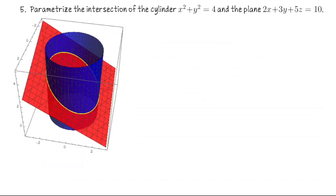Okay, we have one more example in this lecture and that is we want to parametrize the intersection of the cylinder x squared plus y squared equals 4. That's pictured here. So that's a circular cylinder of radius 2 whose central axis is the z-axis. We want to parametrize the intersection of that cylinder and the plane 2x plus 3y plus 5z equals 10. That, of course, is the plane you see here.